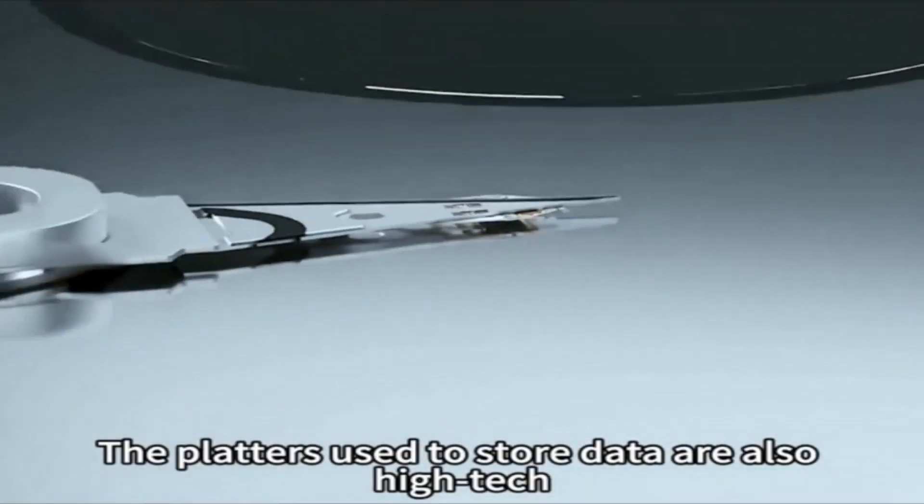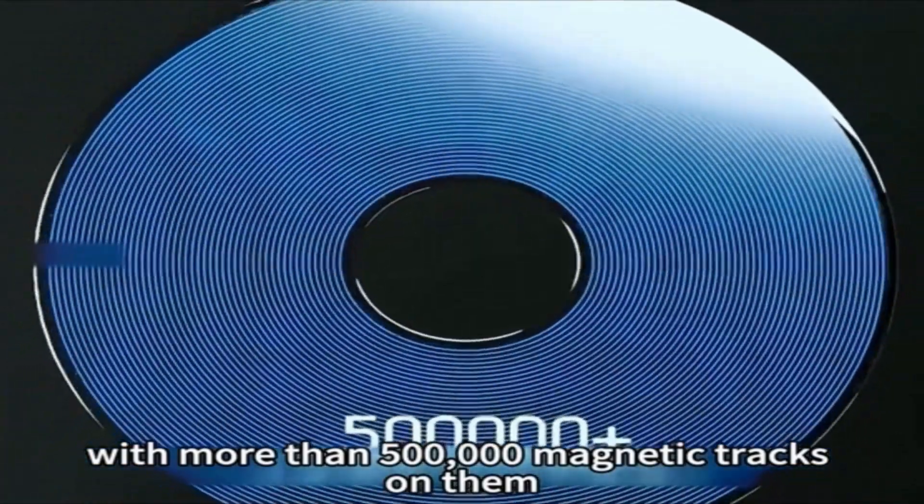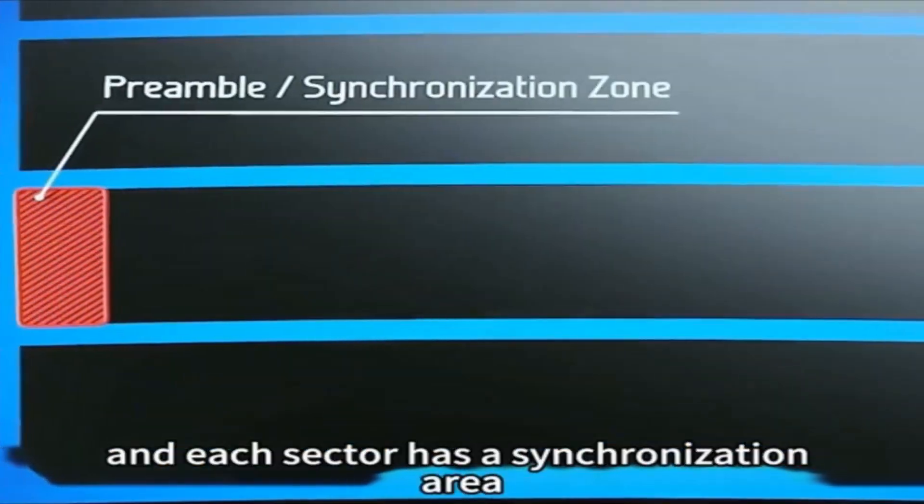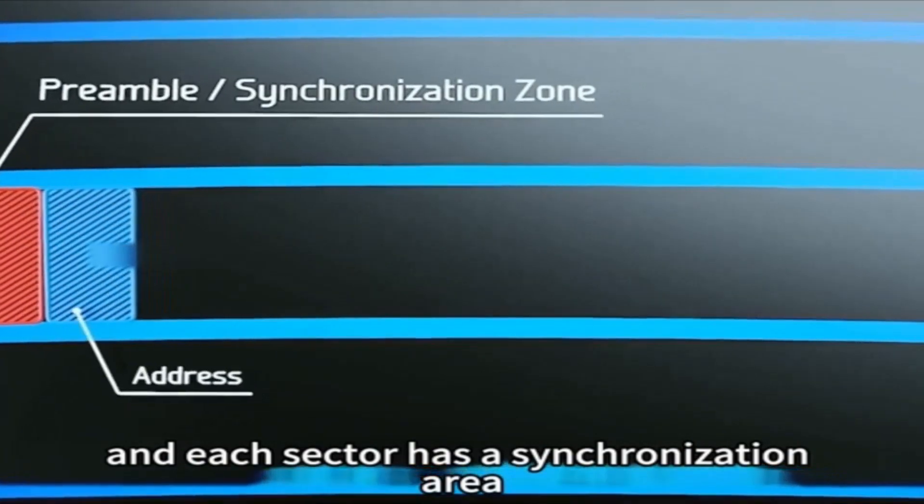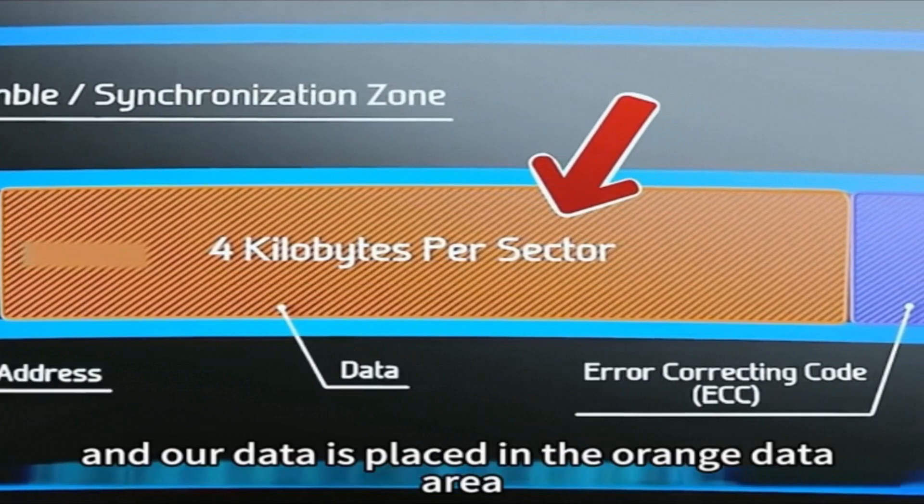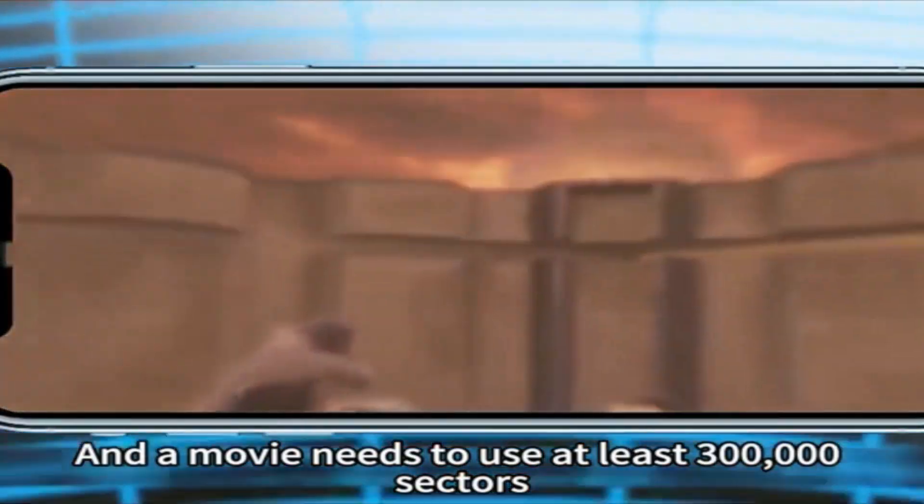The platters used to store data are also high-tech, with more than 500,000 magnetic tracks on them. The magnetic track is divided into multiple sectors, and each sector has a synchronization area, address area, data area, and error correction area. Our data is placed in the orange data area, and a movie needs to use at least 300,000 sectors.